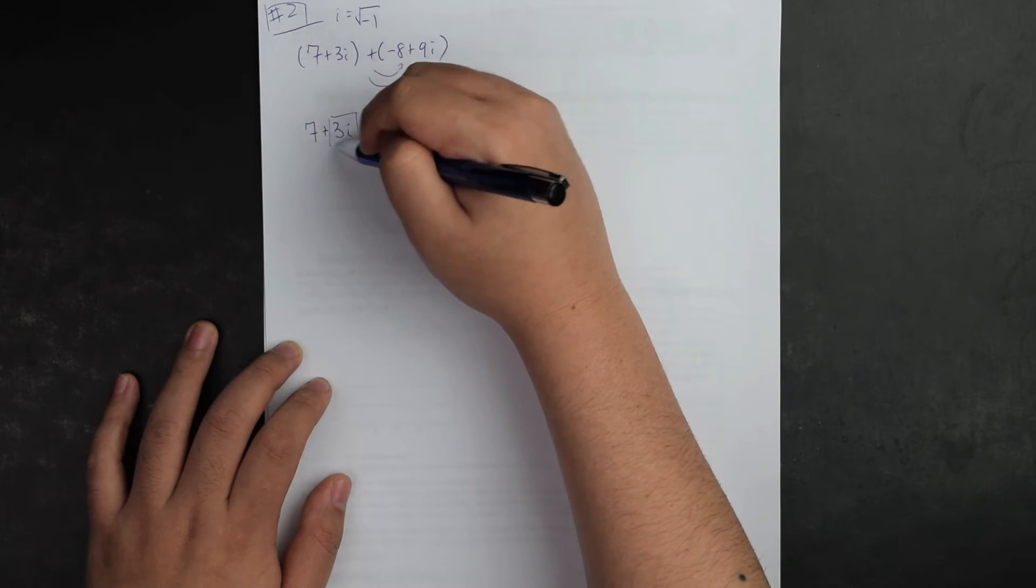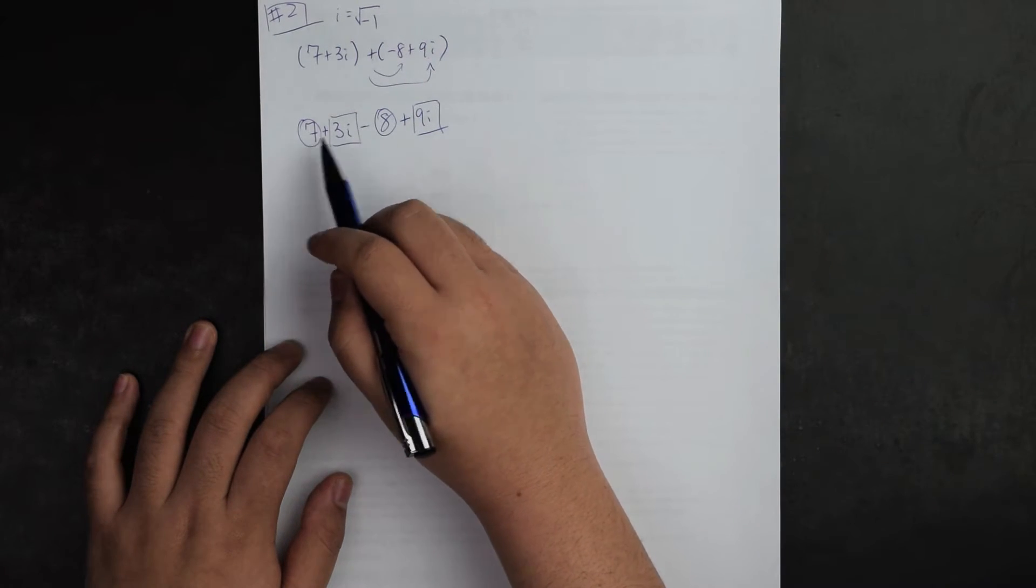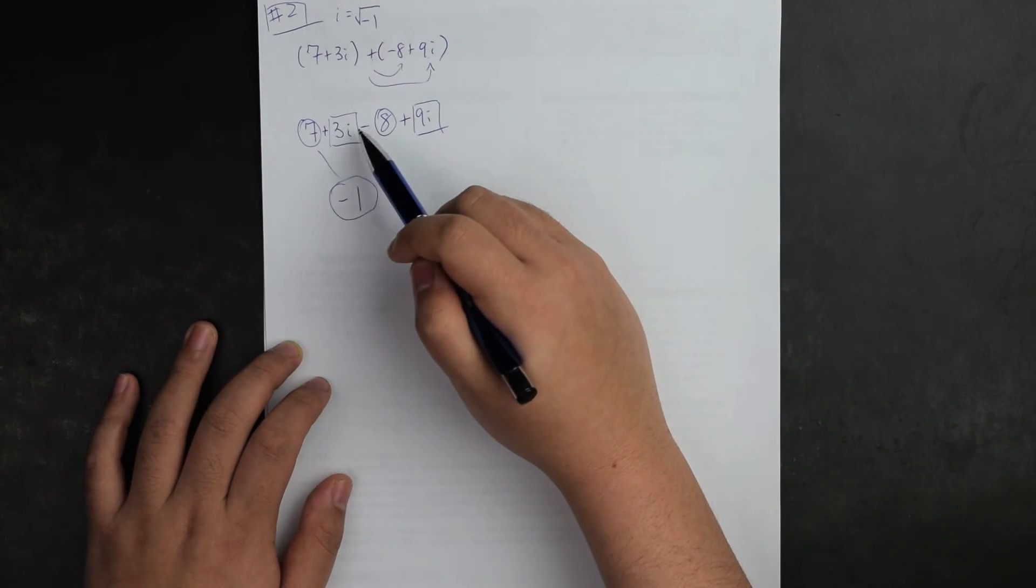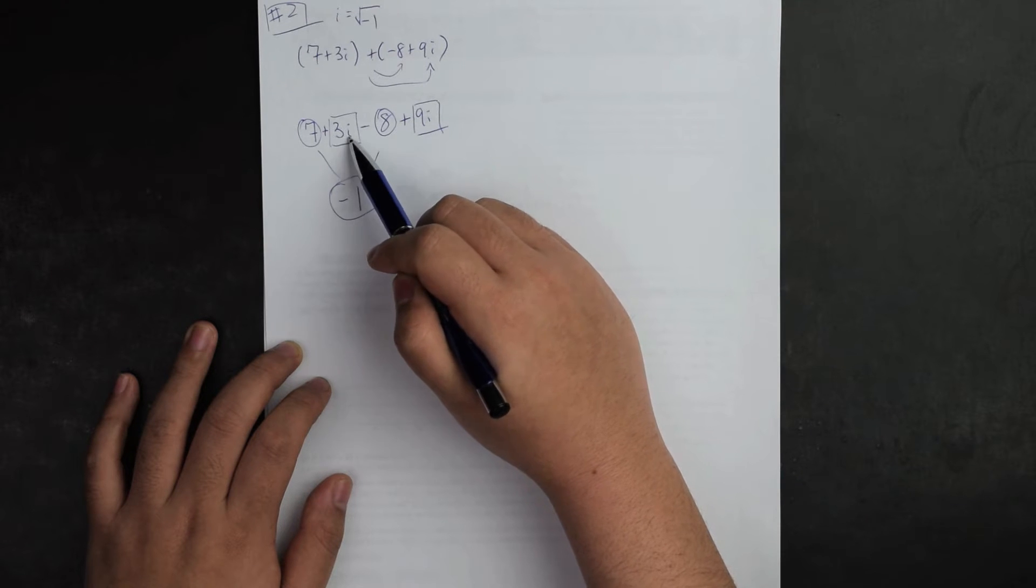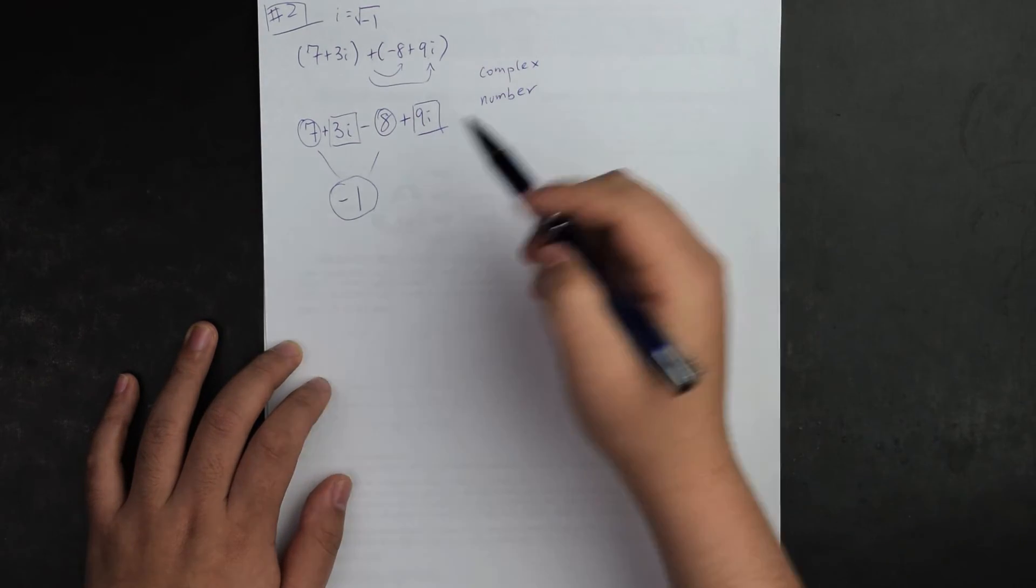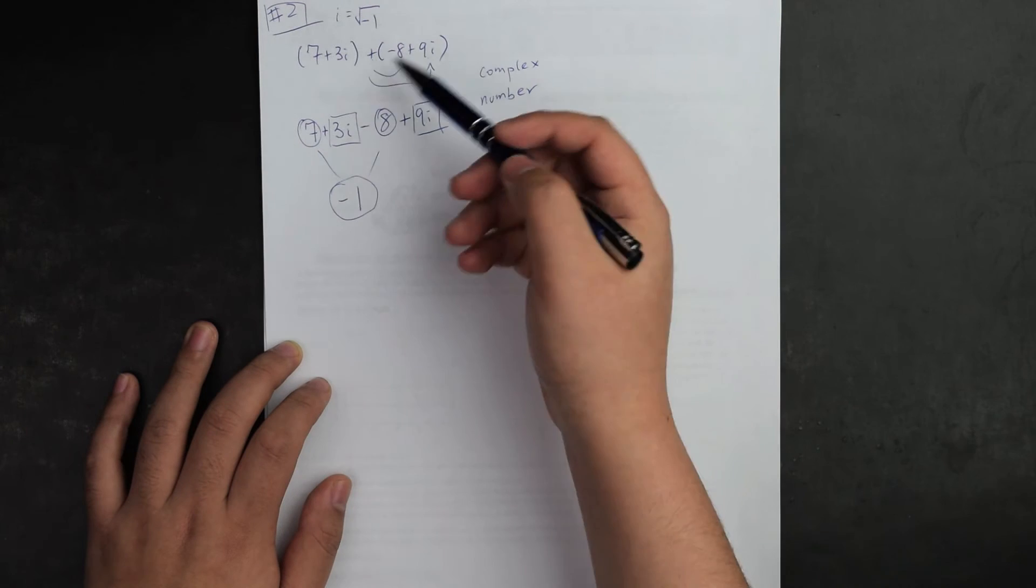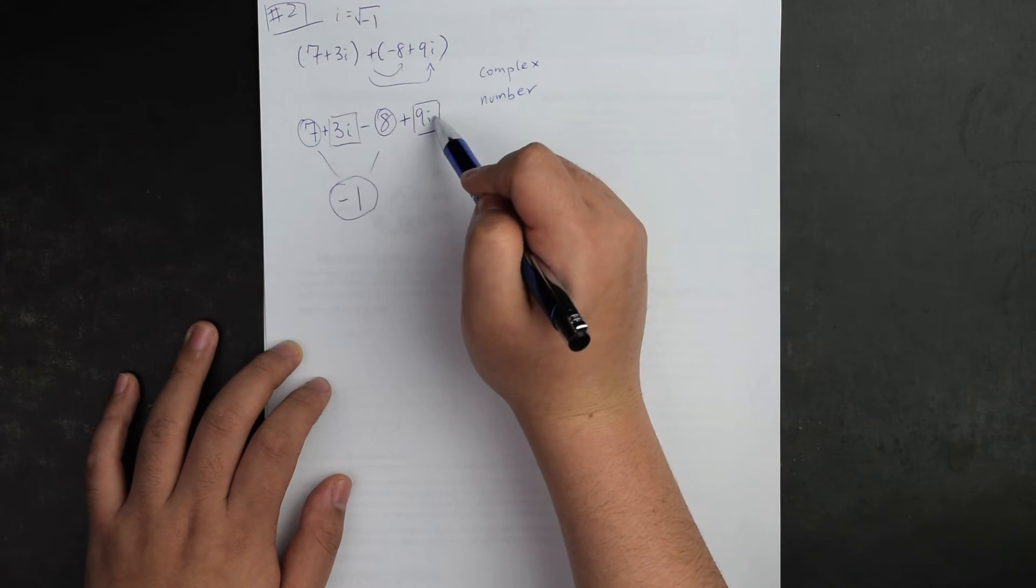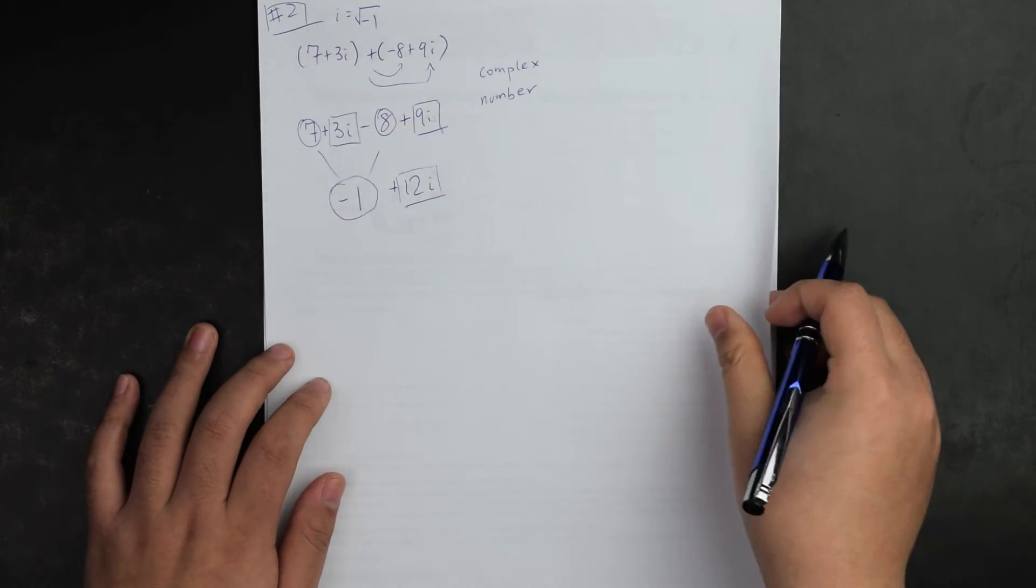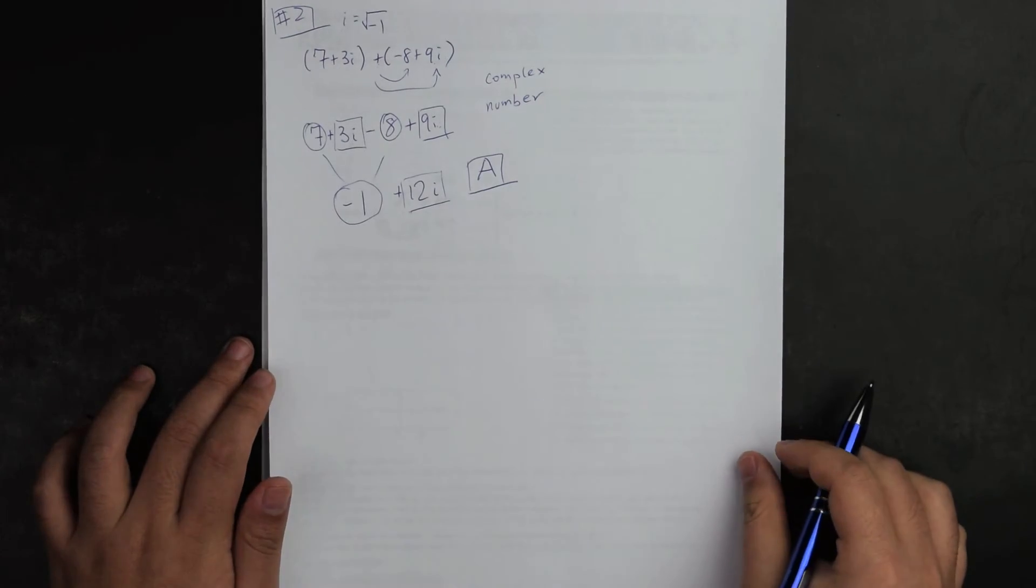Afterwards, the i's must go with the i's while constants go with constants. Seven minus eight is negative one, that's my constant. These are complex numbers, imaginary numbers. We're not using square roots here. Rather, there's 3i plus 9i, which is 12i. So the finalized answer is negative one minus 12i, which is answer A.